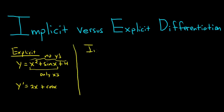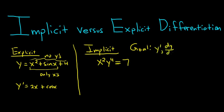Implicit is a bit different. So in implicit differentiation, y is implicitly defined by an equation. For example, you could have x squared y to the fourth equals 7. In this case, we just have an equation, and y is in that equation, mixed in with the x's and y's. So the goal is to find y prime, except we tend to call it dy dx when we do implicit differentiation.